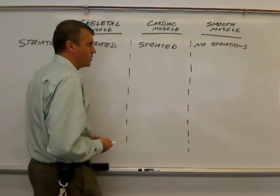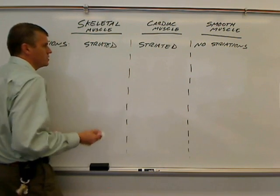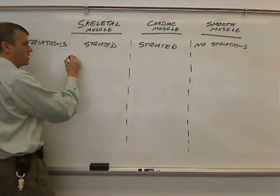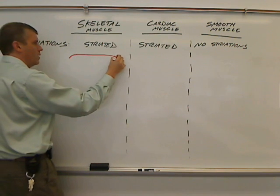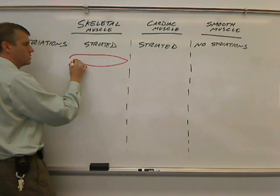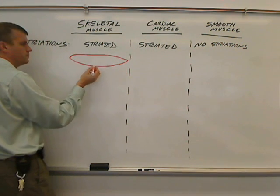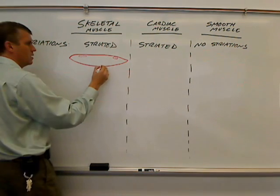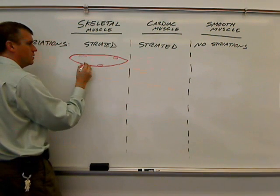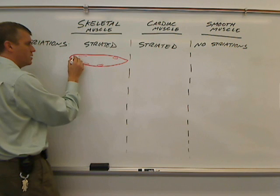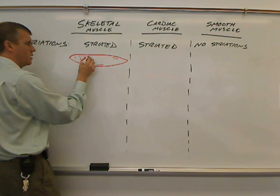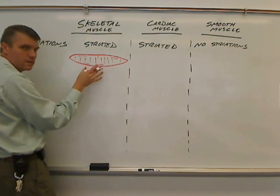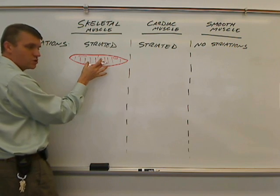Just in case you're wondering what striations are, here's my depiction of a skeletal muscle. They come in these long tubes, and as you look at the tube under the microscope, you'll see nuclei along the edge and going crosswise these little lines. Those are the striations.